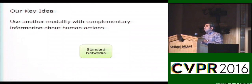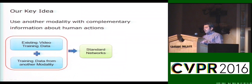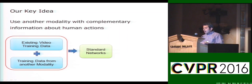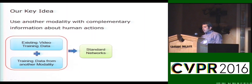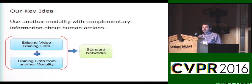Our key idea is to start with a standard network, and instead of augmenting with additional training data or making the model more complex, we would like to augment the existing training data from videos with another modality which can bring more complementary information and help the network learn better and provide better accuracy. As I will show in the results section, adding a small amount of training data from another modality actually helps improve accuracy.